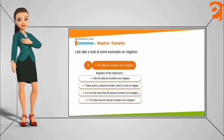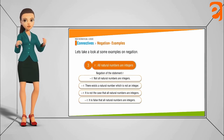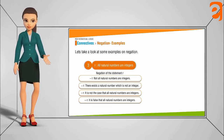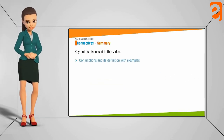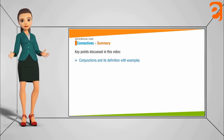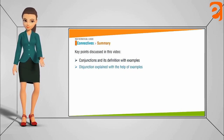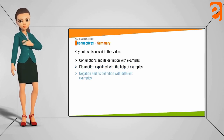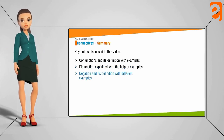So this is how we studied conjunction, disjunction, and negation with proper examples. Key points discussed in this video are: conjunction and its definition with examples, disjunction explained with the help of examples, and negation and its definition with different examples.